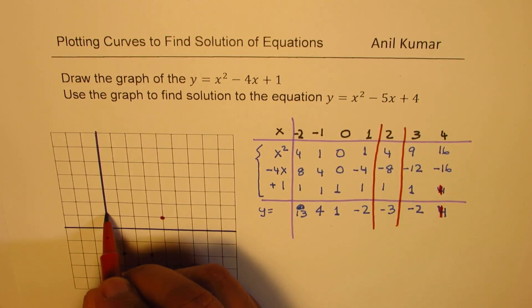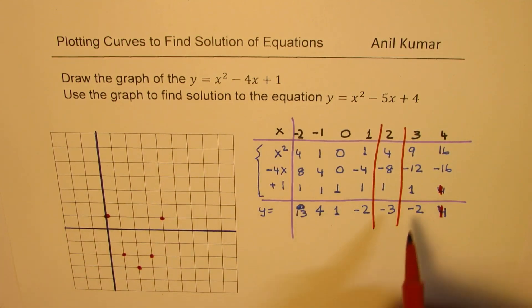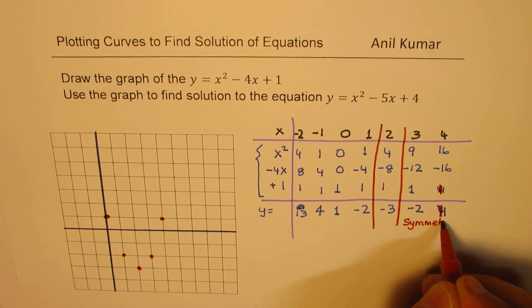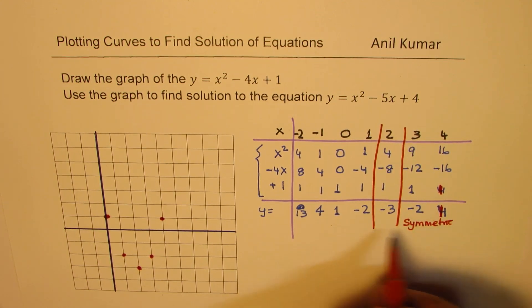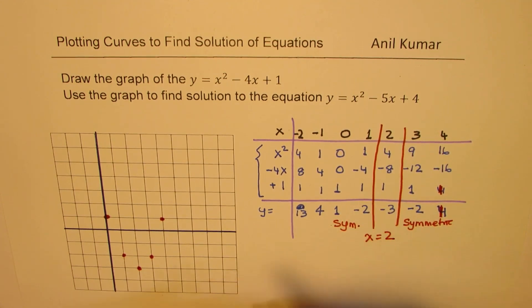Now we can actually use the properties of parabola. This is the axis and then we should have symmetry. So do you see this is symmetric? So it should have been 1. So it is symmetric. Line of symmetry here is x equals 2. Perfect.